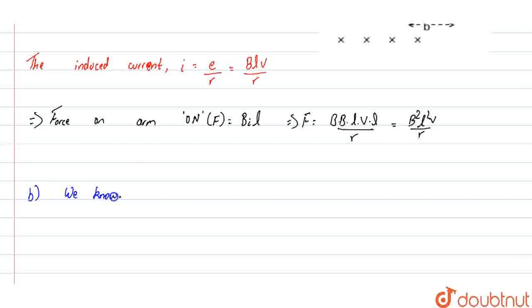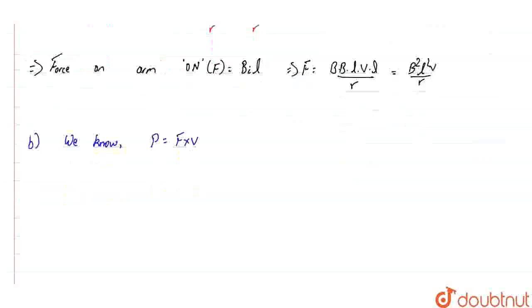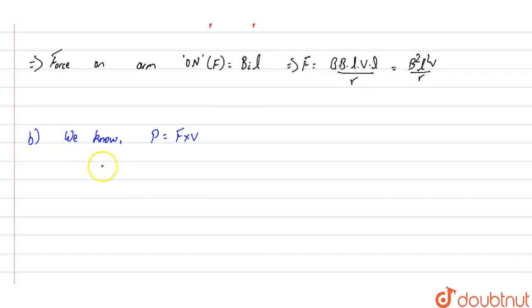We know that power is given by P equals F times V, where F is the force and V is the velocity. From the previous derivation, force is given by B squared L squared V by R.